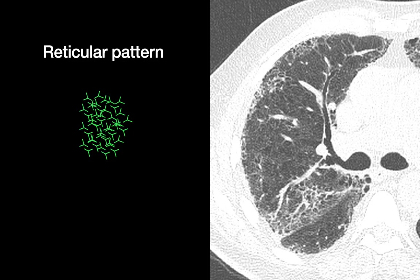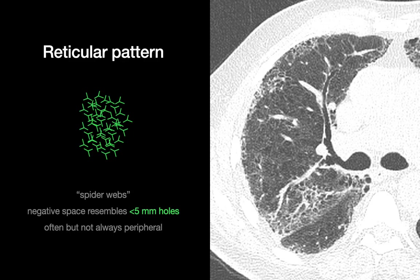The reticular interstitial pattern is best described as a spider web or lace-like appearance. These little lines define what looks like tiny little holes on the order of five millimeters or smaller. Sometimes if you look carefully, the interior of those holes is not necessarily black but could be dark gray — the color of normal lung parenchyma. They tend to be peripheral in distribution, but not always.